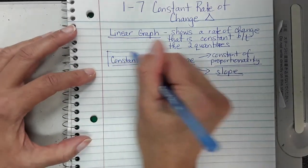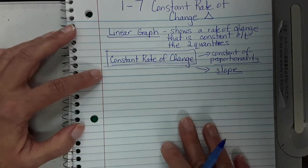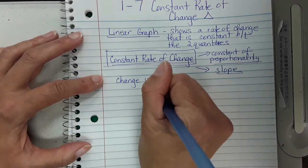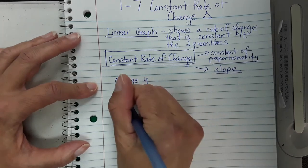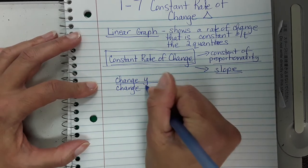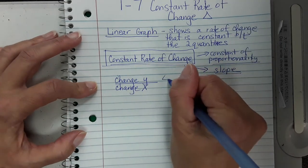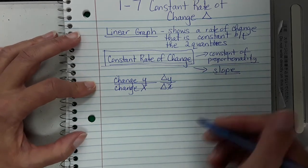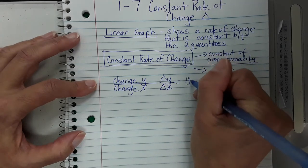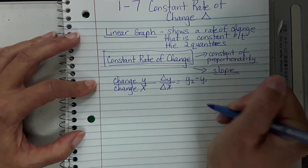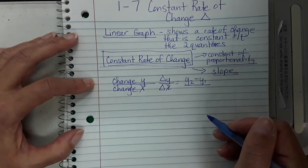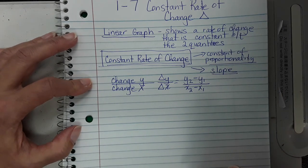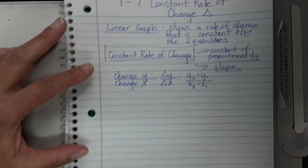To find the constant rate of change, we're going to look at it in a graph and in a table. It's your change in Y over your change in X — meaning you subtract your two different Y values over your change in X. When I write that, you'll see me write triangle-Y over triangle-X — that just means change. You subtract the second Y quantity minus the first Y quantity, and the second X quantity minus the first X quantity.